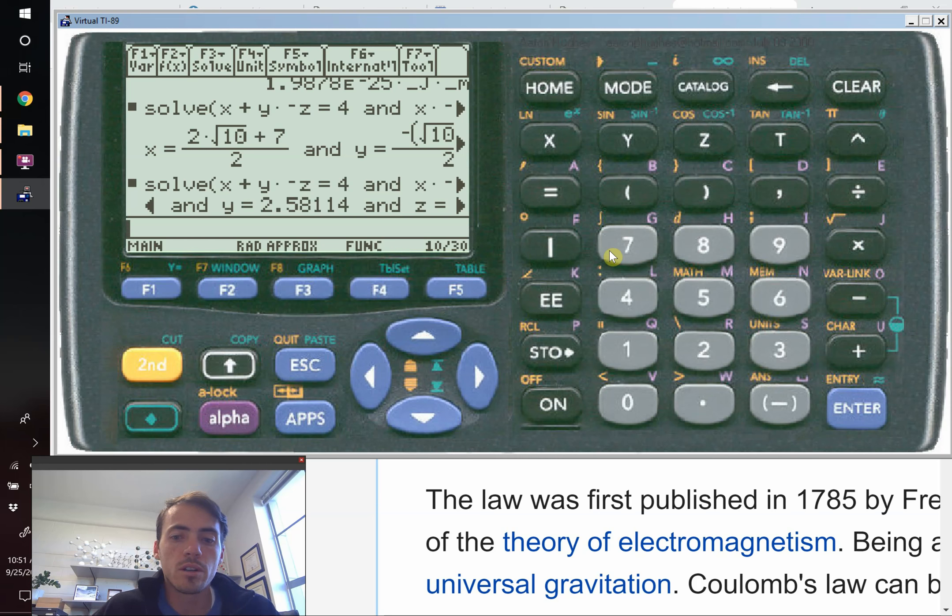We're going to store it as a new variable. So the value is 8.85e-12, that's farads per meter for the units. We're going to do the underscore because this is going to be a unit, capital F, divided by underscore, and then we're going to do meters, right?